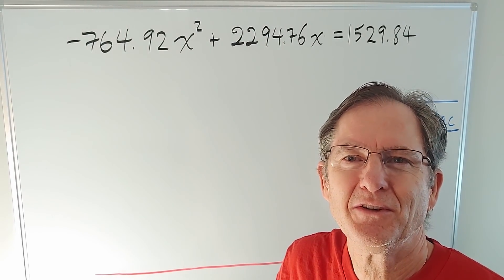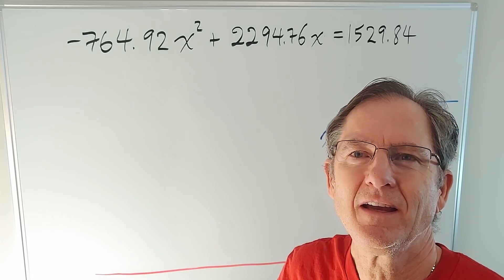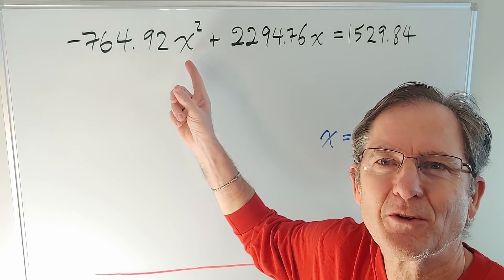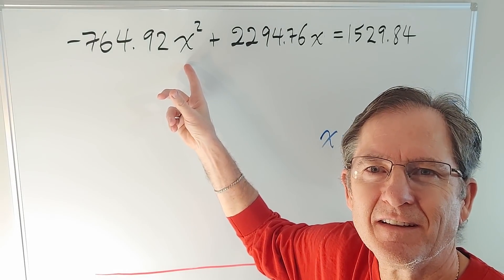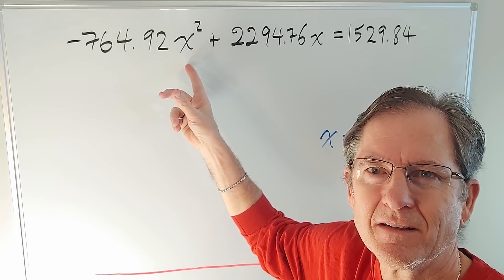Good morning, good afternoon, good evening, good middle of the night. How do you solve an equation like this? It's quadratic. What's the first step?